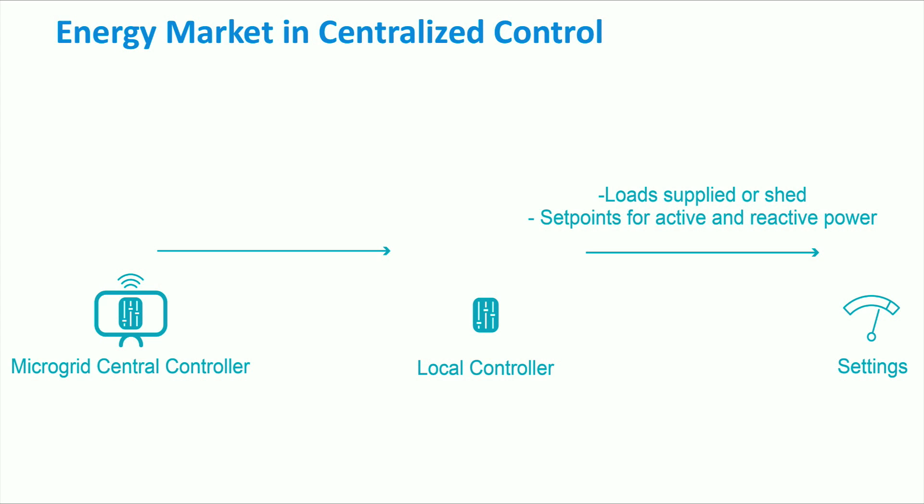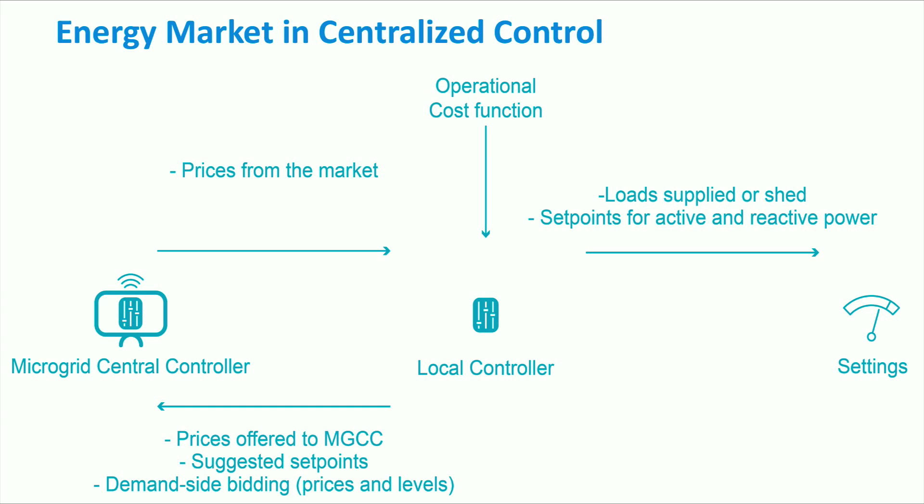The microgrid central controller plays an important role in demand-side bidding. It informs consumers about the external market prices, such as day-ahead, real-time, or ancillary service market prices. These price signals are sent to the central controller through the upstream network interface. Based on those price signals, the consumers are able to submit their preferred bids to the controller every hour. Accordingly, the microgrid central controller runs its optimization routines and then sends the updated setpoints to the local controllers of distributed generators, storage units, and loads.